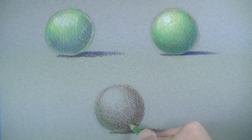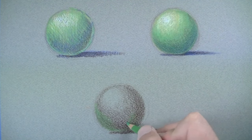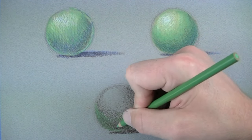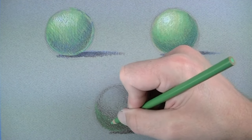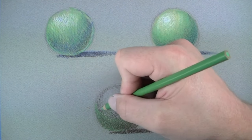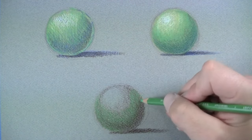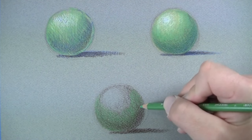Once my values have been determined, I can layer on top of those values using the local color. Here again, the local color is green. I can put more pressure on the pencil here because some of my undertones are already established. I want the lighter values of the local color to mix with the shadowed areas.